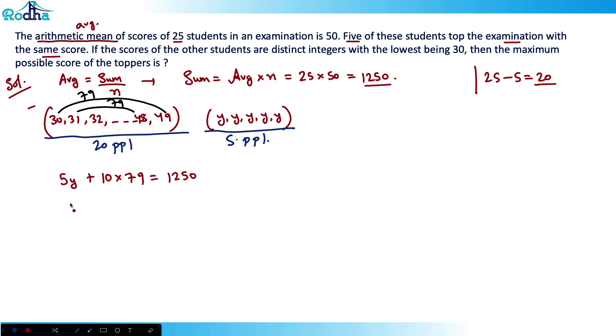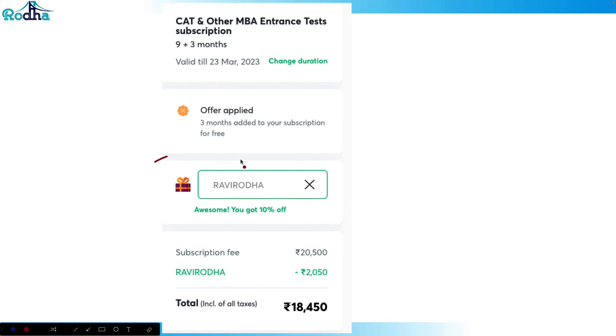So that means this y value will be how much? So 5y will be equal to 460, therefore y will be equal to 92. So 92 is the answer for this question. That's the score of topper is 92. That's an easy question. So should have attempted in CAT exam.